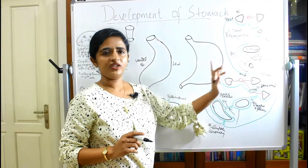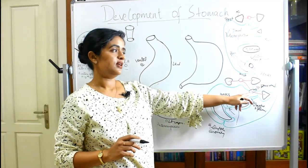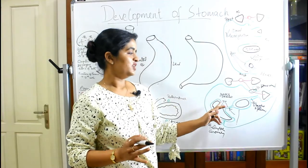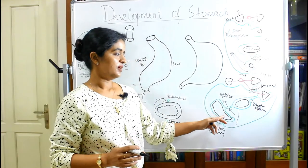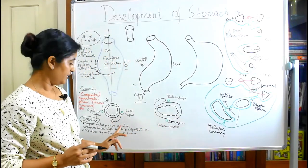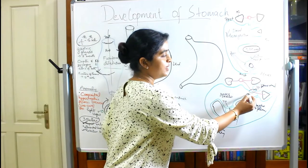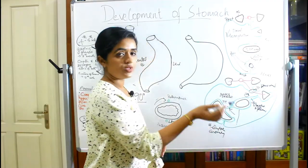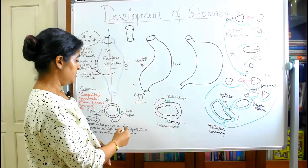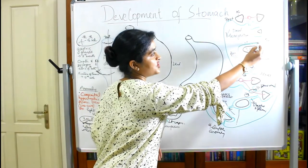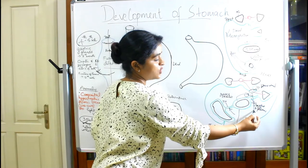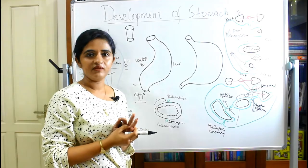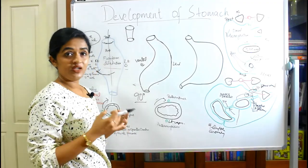The splenic vessels run through the lienorenal ligament — the splenic artery and renal vessels pass through it as it is reflected onto the kidney on the posterior abdominal wall. Regarding the omental bursa, the lesser sac lies just posterior to the stomach; it shifts to the left and grows downward, eventually forming part of the fold of the greater omentum, which will be discussed further in sessions on peritoneal folds.